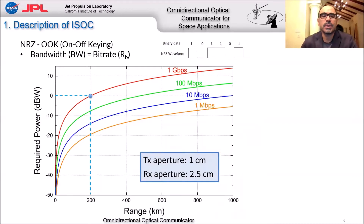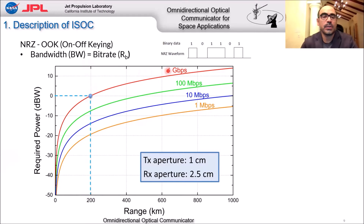These are simulation results for the link budget — how far can we go with the ISAC? The vertical axis is the required optical power per telescope and the horizontal is distance. For instance, with 0 dBW (one watt of power), you can achieve 200 kilometers at one gigabit per second. With that same one watt, you can reach 1,000 kilometers at 10 megabits per second. The ranges of interest for ISAC go from tens of kilometers to thousands of kilometers.